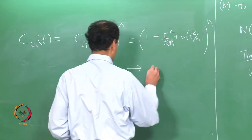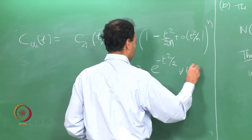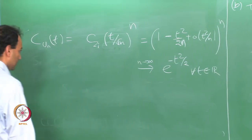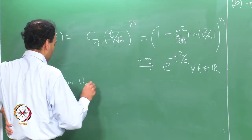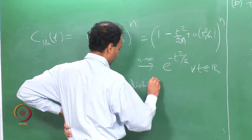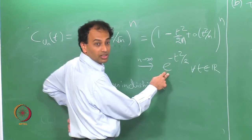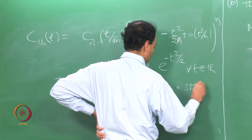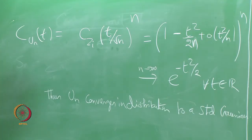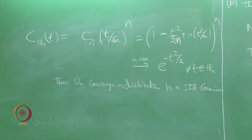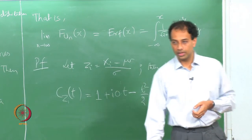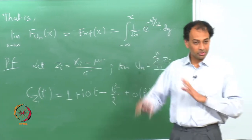This goes to e to the power minus t² over 2 for all t as n tends to infinity, thus U_n converges in distribution. This is the characteristic function of a standard Gaussian. It is a very short proof if you look at it — we have used characteristic function convergence to establish a very fundamental result in just 3 steps, and this is a perfectly rigorous proof.